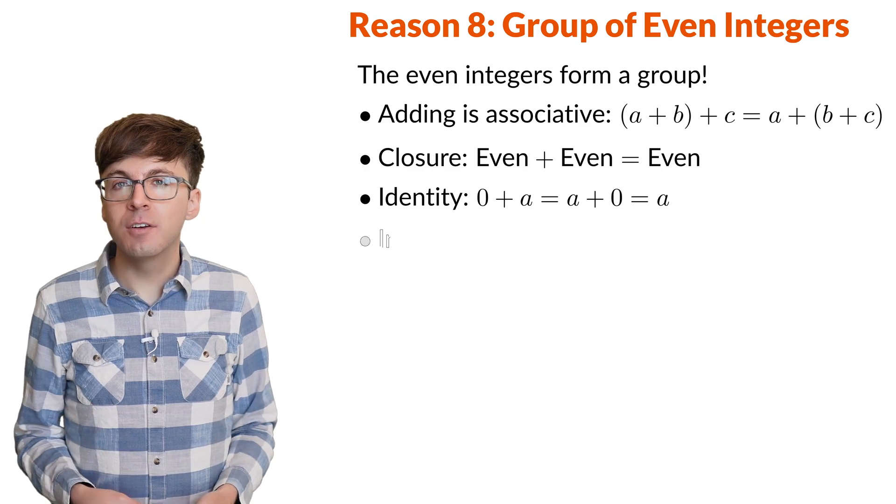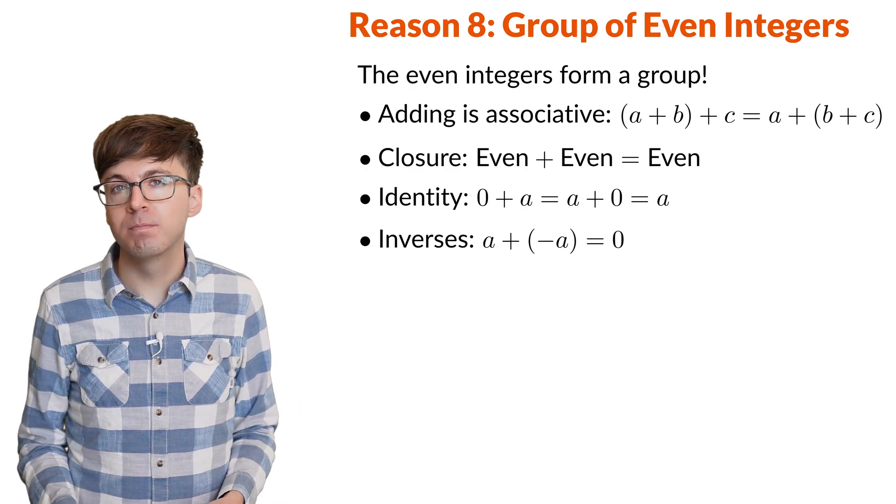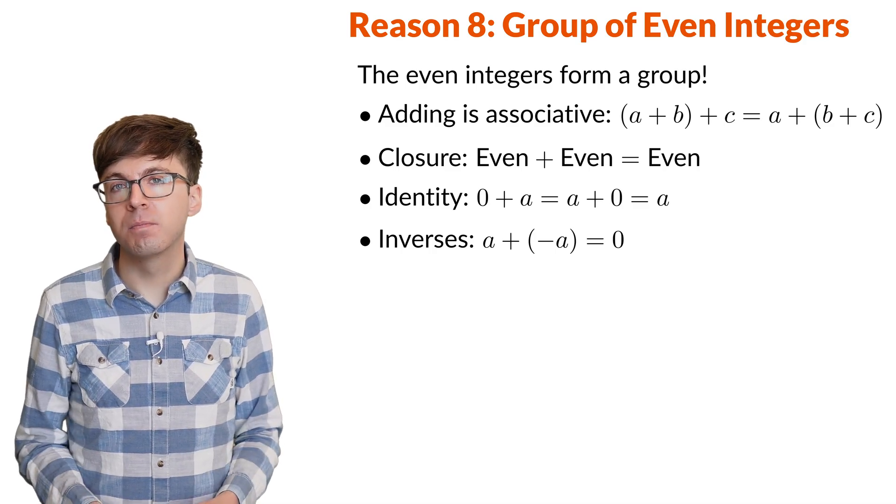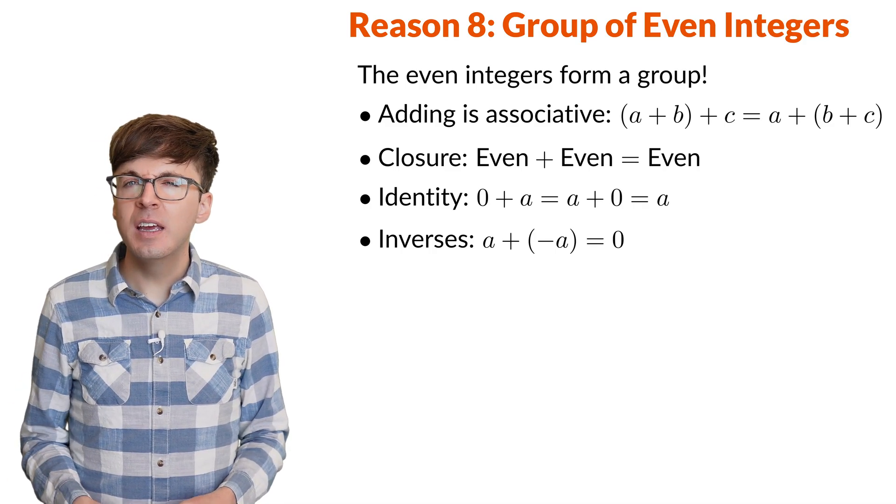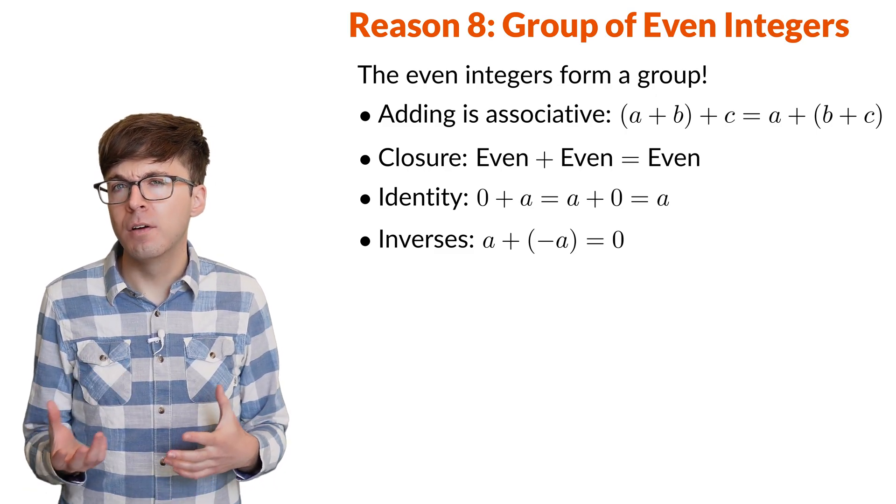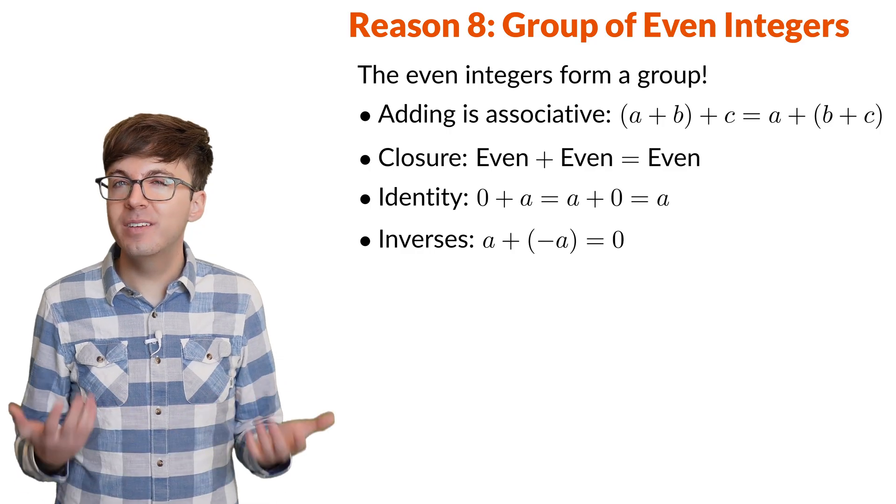Lastly, every even integer has an additive inverse. Like the inverse of 4 is negative 4, since 4 plus negative 4 is 0. So if 0 is not even, then we'd have to say the even integers together with 0 form a group. Again, we see it's best if 0 is even.